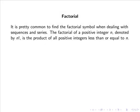It is pretty common to find a factorial symbol when dealing with sequences and series. The factorial of a positive integer n, denoted by n factorial, is the product of all positive integers less than or equal to n. So for example, 4 factorial equals 4 multiplied by 3 multiplied by 2 multiplied by 1, or simply 24.